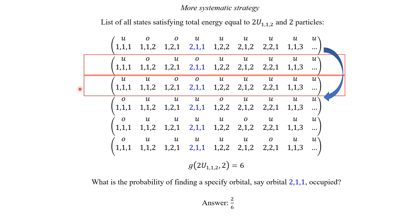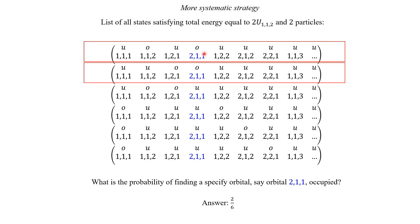We need to develop a way of extending this idea when you have lots of states. To do that, we're going to reorganize the list a little bit. We're going to start by placing all states with our orbital of interest occupied on the top, moving those states to the top of the list. That's all we've done — we just rearranged the positions so as to have all states with the orbital of interest occupied on top.